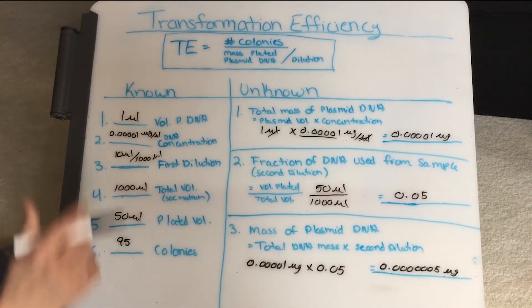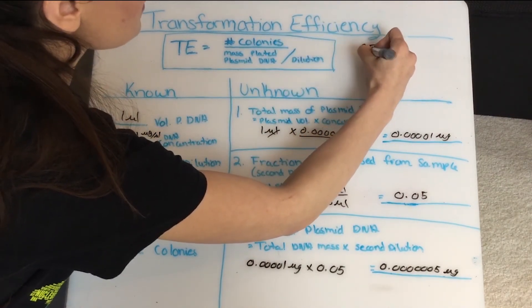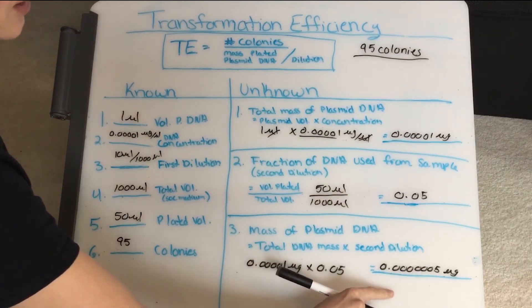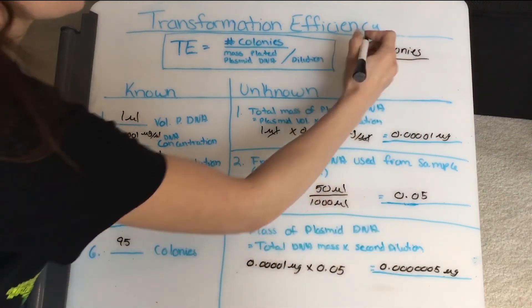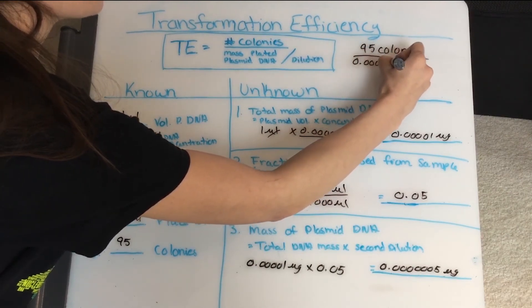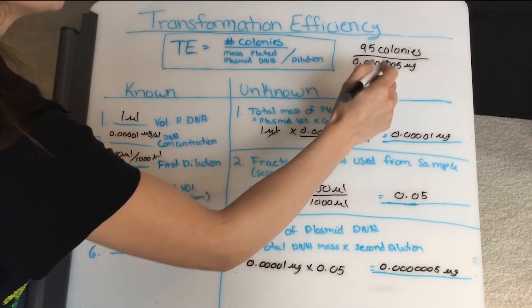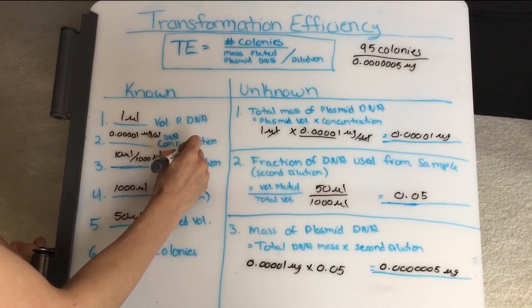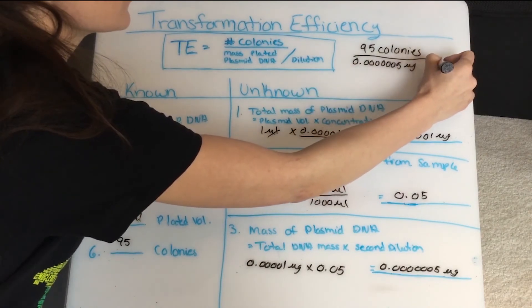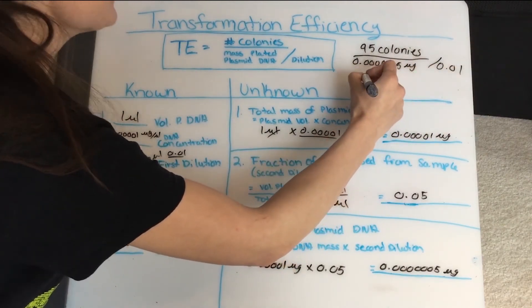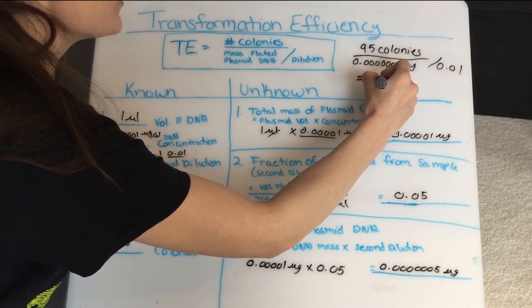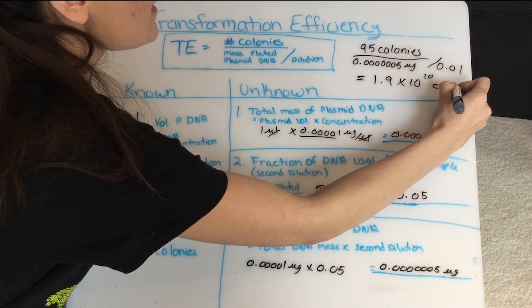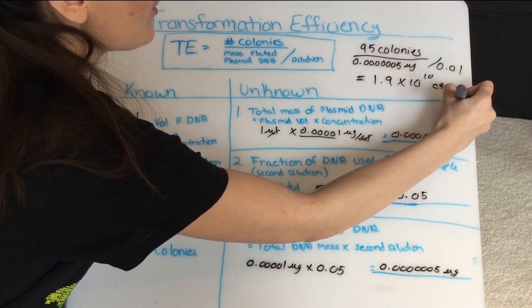So I've got my 95 colonies, and I'll take that over the mass of DNA that I actually used or the plated mass of plasmid DNA. And then I also need to take that over my first dilution here, so that's 0.01. So my answer is 1.9 times 10 to the 10th, and that's colony forming units per microgram of DNA.